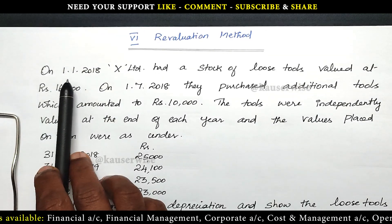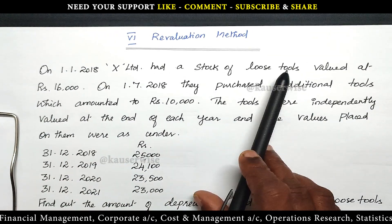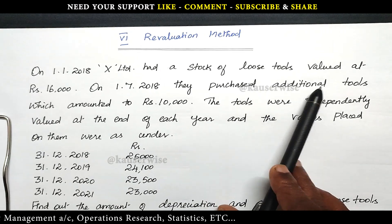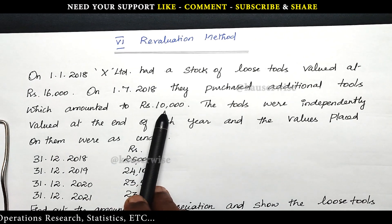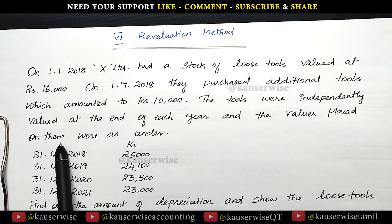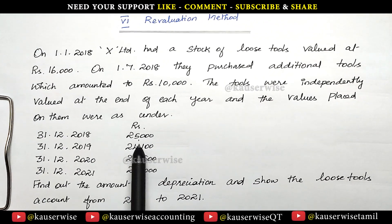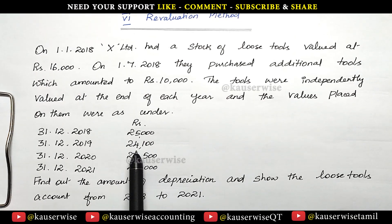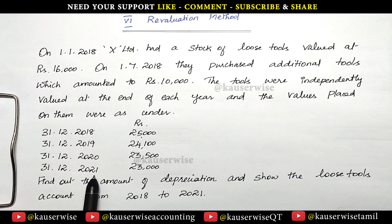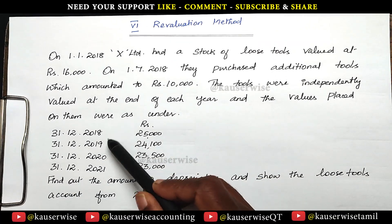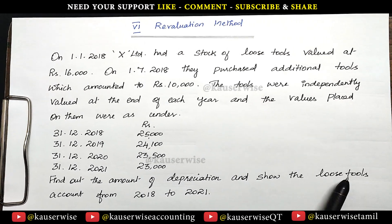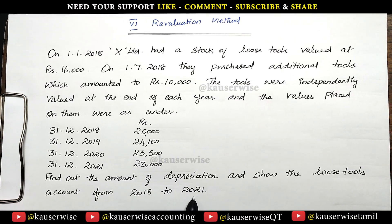Now see the problem. On 1st January 2018, X Limited had a stock of loose tools valued at 16,000. On 1st July 2018, they purchased additional tools amounting to rupees 10,000. The tools were independently valued at the end of each year: at the end of 2018, 25,000; end of 2019, 24,100; end of 2020, 23,500; end of 2021, 23,000. With this information, they are asking you to find out the amount of depreciation and show the loose tools account from 2018 to 2021.